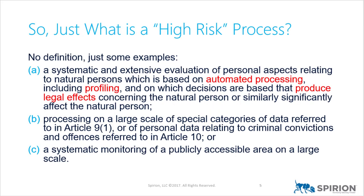Article 35 talks about the idea of a high-risk process, and I get this question all the time — what's high risk? The short answer is we don't know entirely. They give us examples. The first one talks about systematic and extensive evaluation of someone based on automated processing, including profiling — tracking someone's movements, creating a model, predicting purchasing behavior or employment behavior, like whether someone is likely to commit embezzlement. The possibilities are endless.